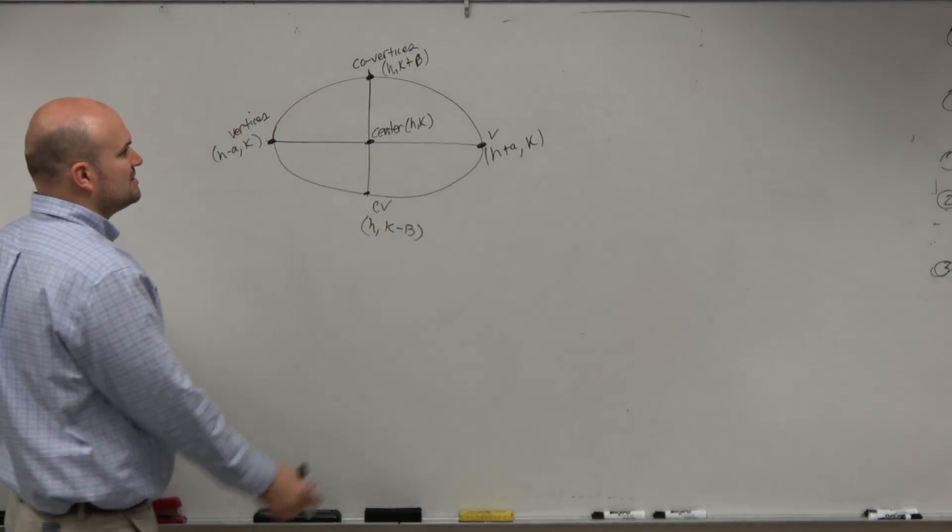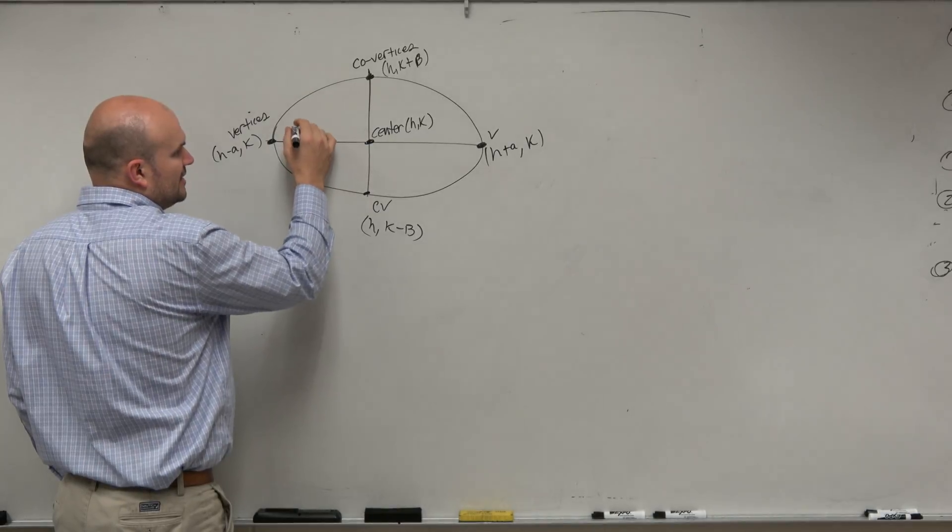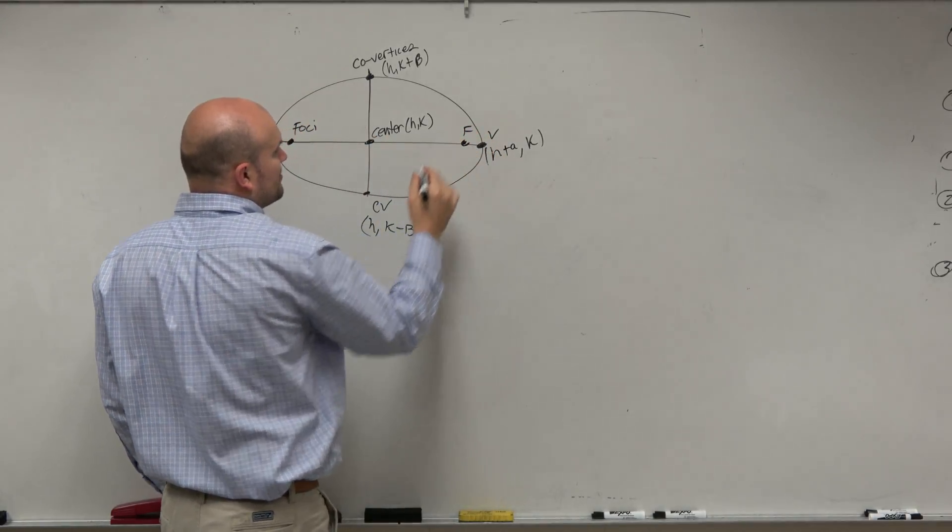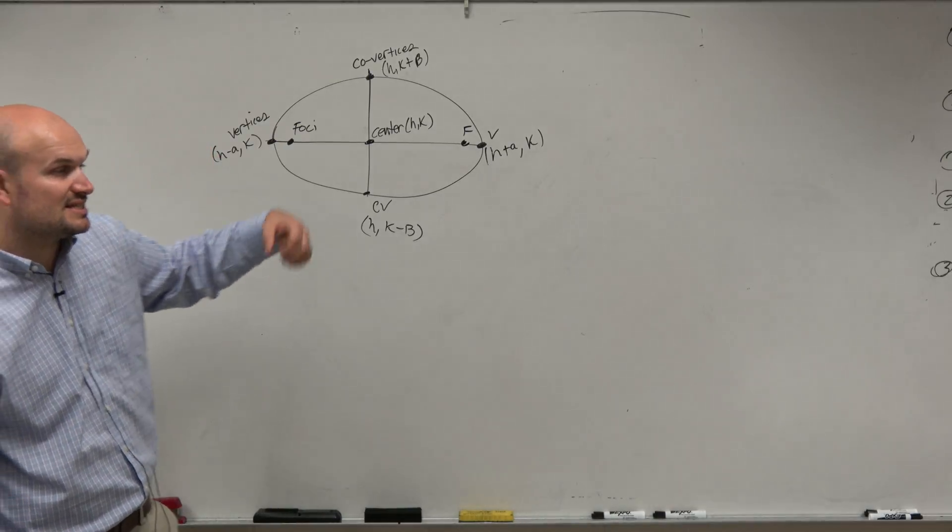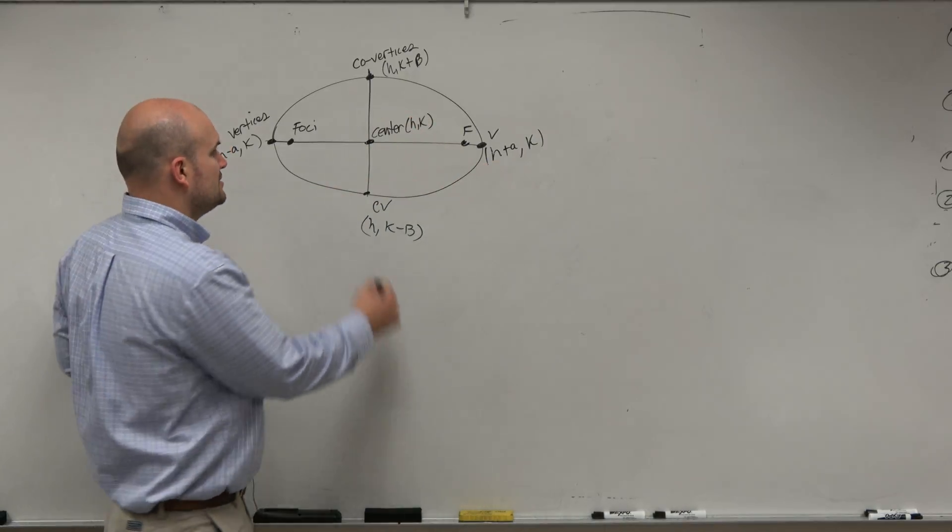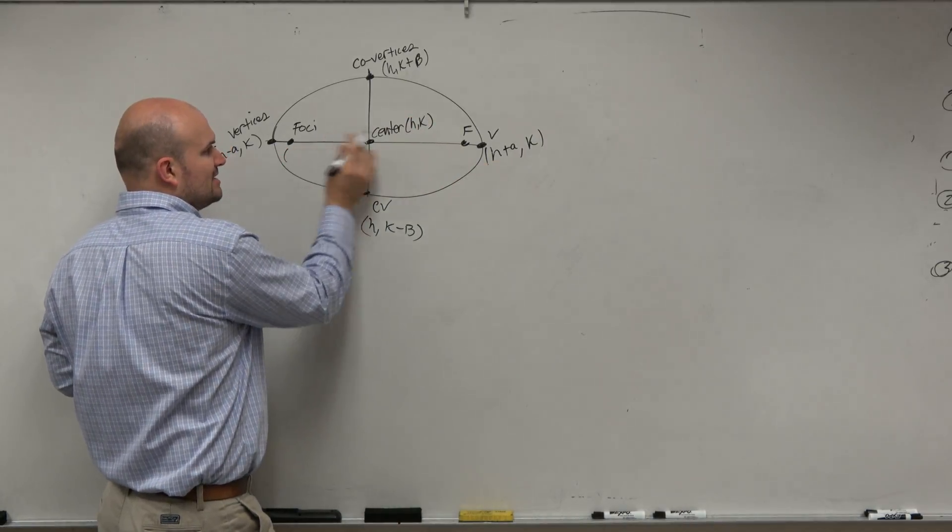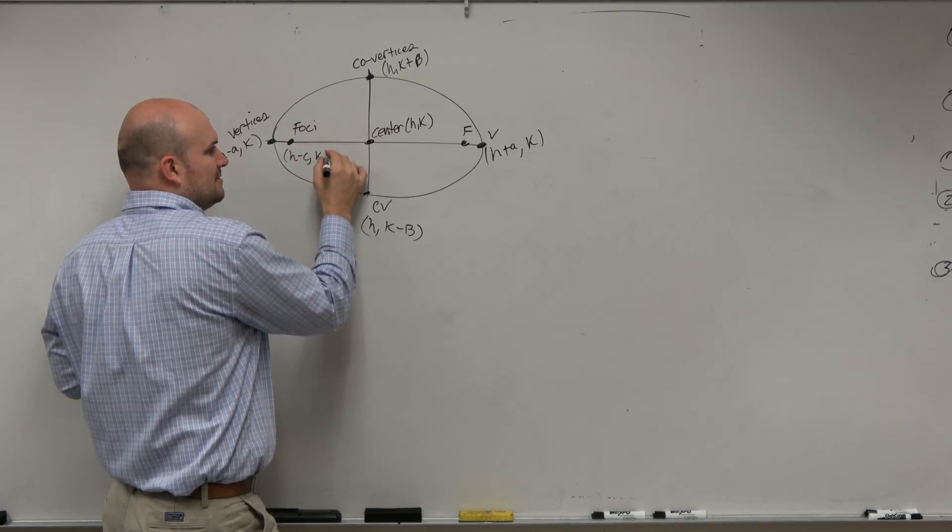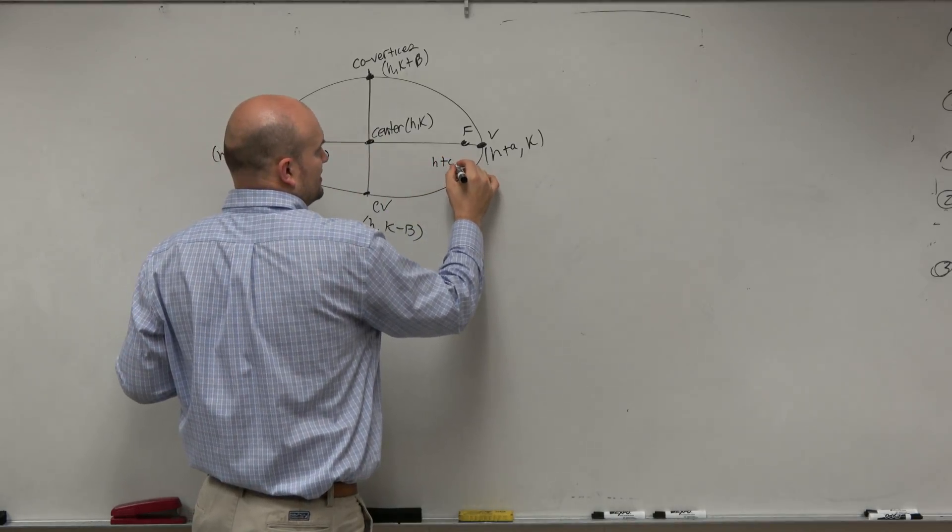And then the last two points that we talked about, guys, was the foci. And remember, the foci is a distance c away from the center. So the distance from the center to your foci is c. So again, if I wanted to kind of write the coordinate points, I would need to write them left and right from the center. So it would be h minus c comma k and h plus c comma k.